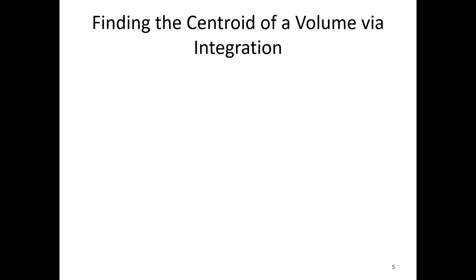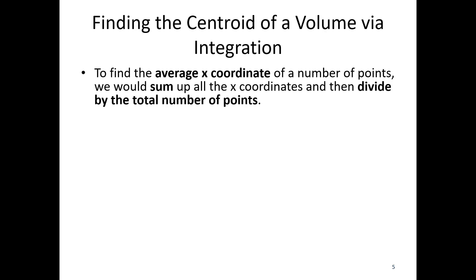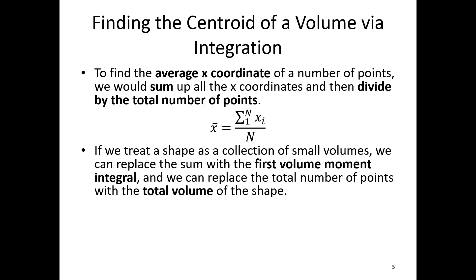So how do we find the centroid of a volume via integration? It is the average x coordinate, the average y coordinate, and the average z coordinate. To find the average x coordinate of a number of different points in 3D space, we would take all of those x coordinates, add those together, and divide by the total number of points. So if I've got 10 points, I divide by 10 on the bottom. That's the definition of an average.